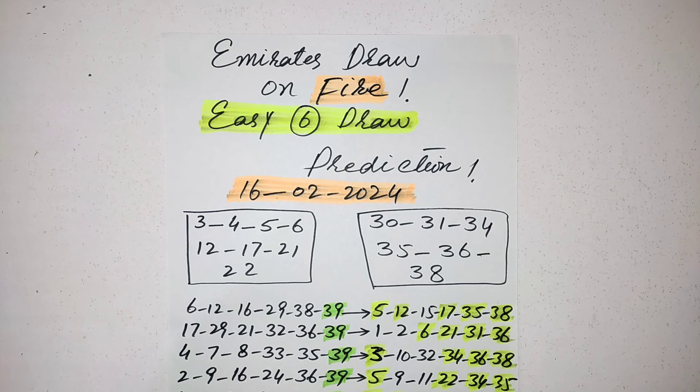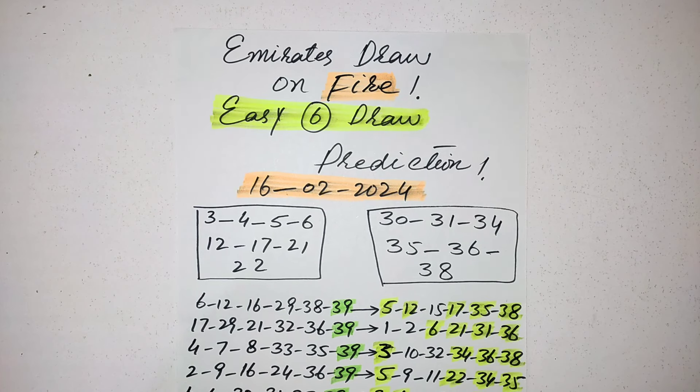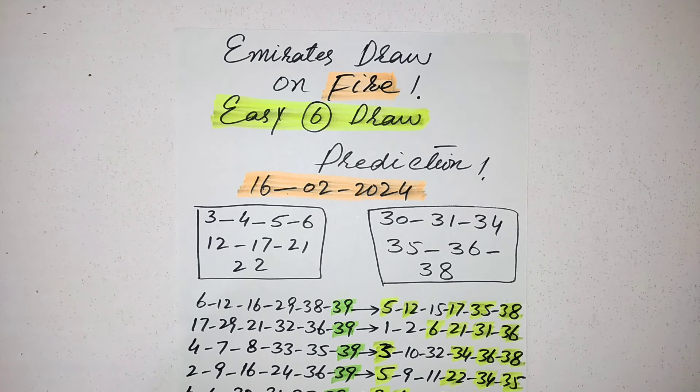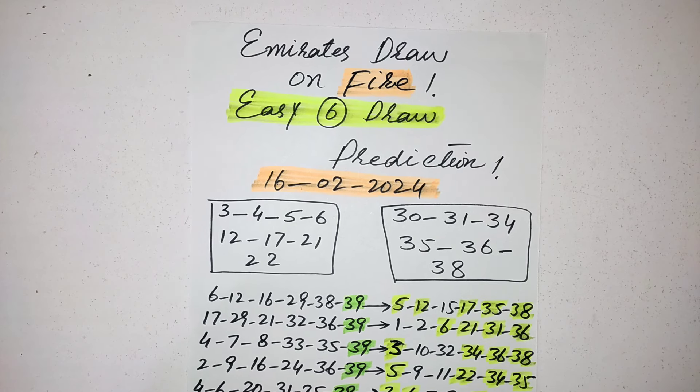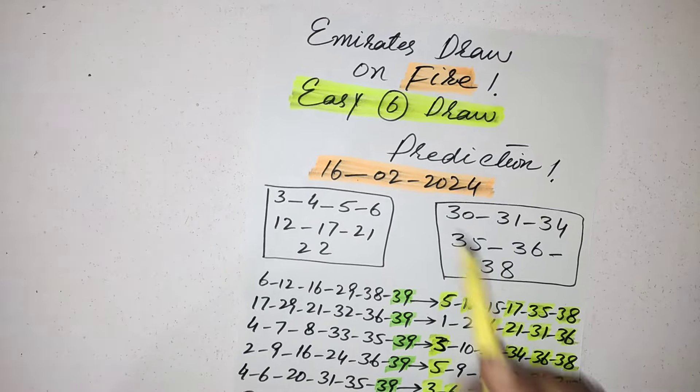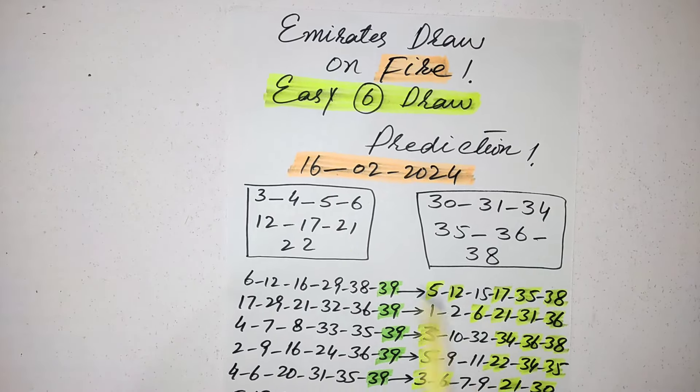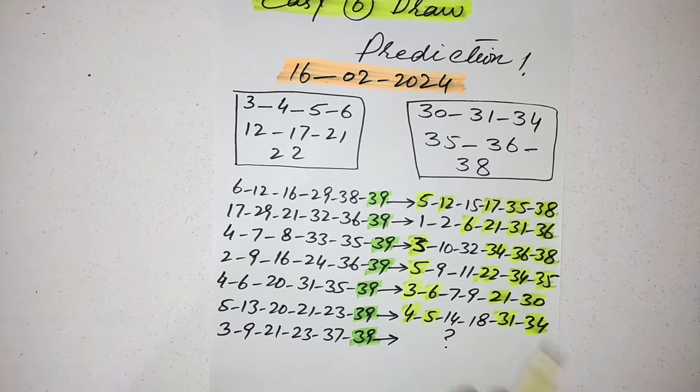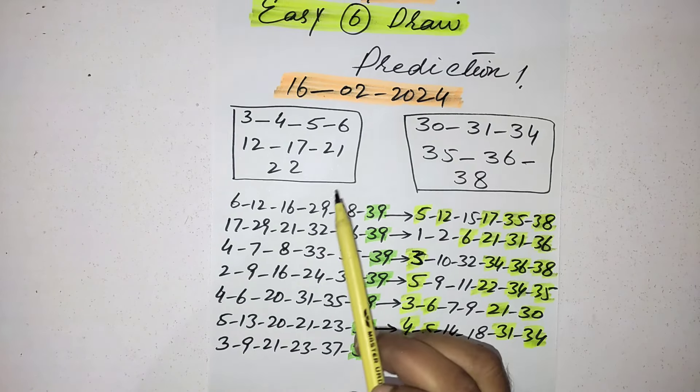In previous draws, the Emirates Draw is very kind to Pakistan people, so you should must try in these draws. In the upcoming draws you also could be the next big winner of these lotteries. Today I am coming up with my best prediction for the Easy 6 draw which is on 16th February 2024. I made a lot of hard work according to my research for this draw.